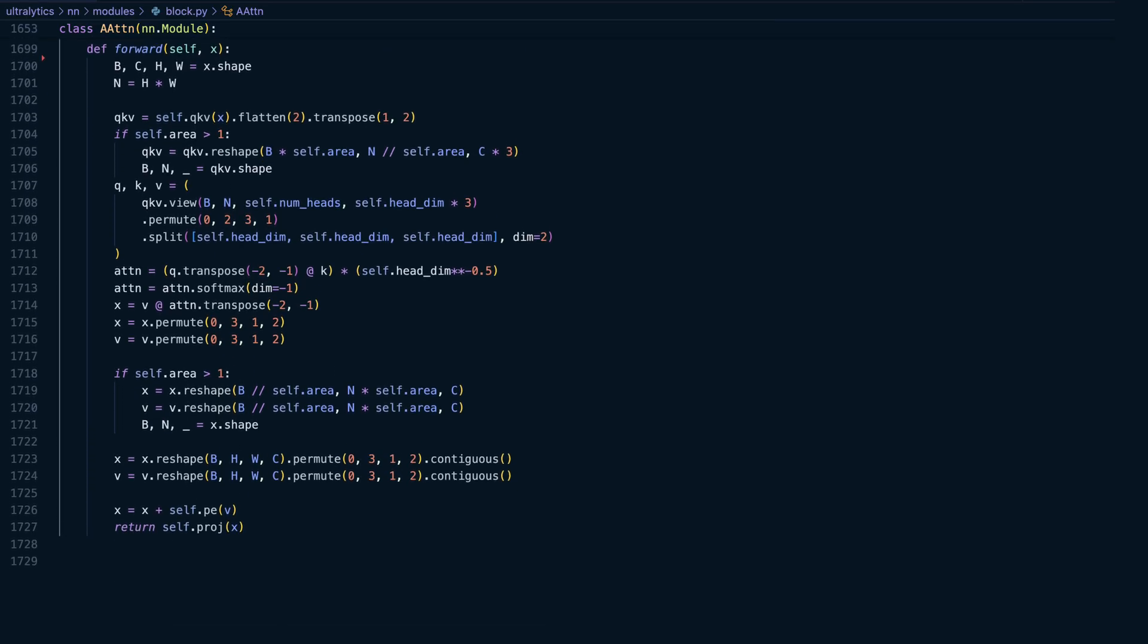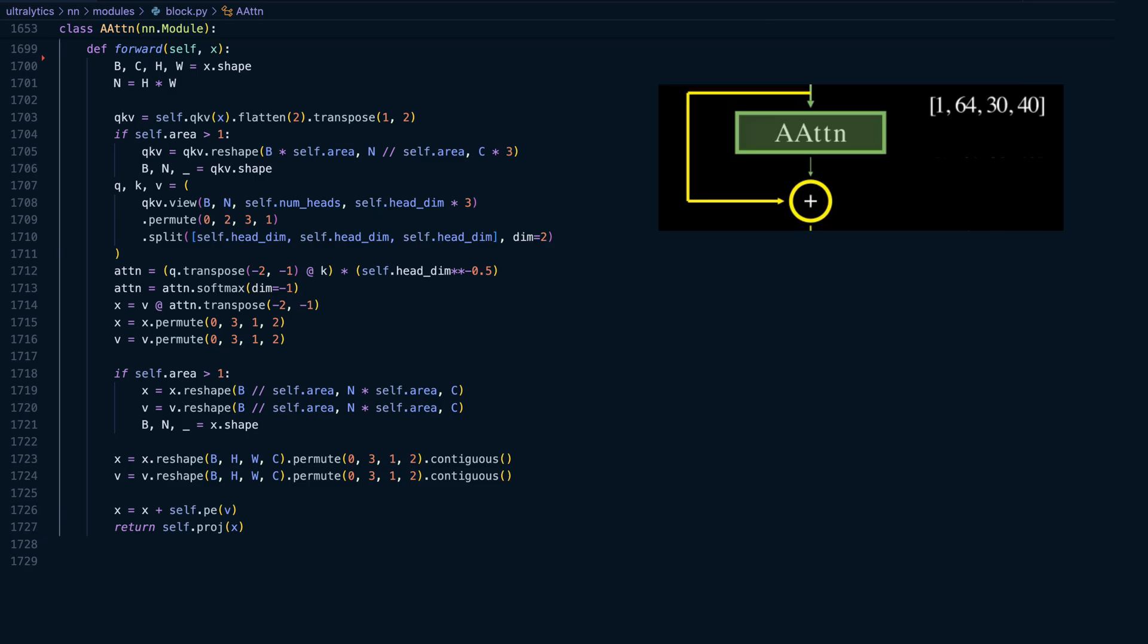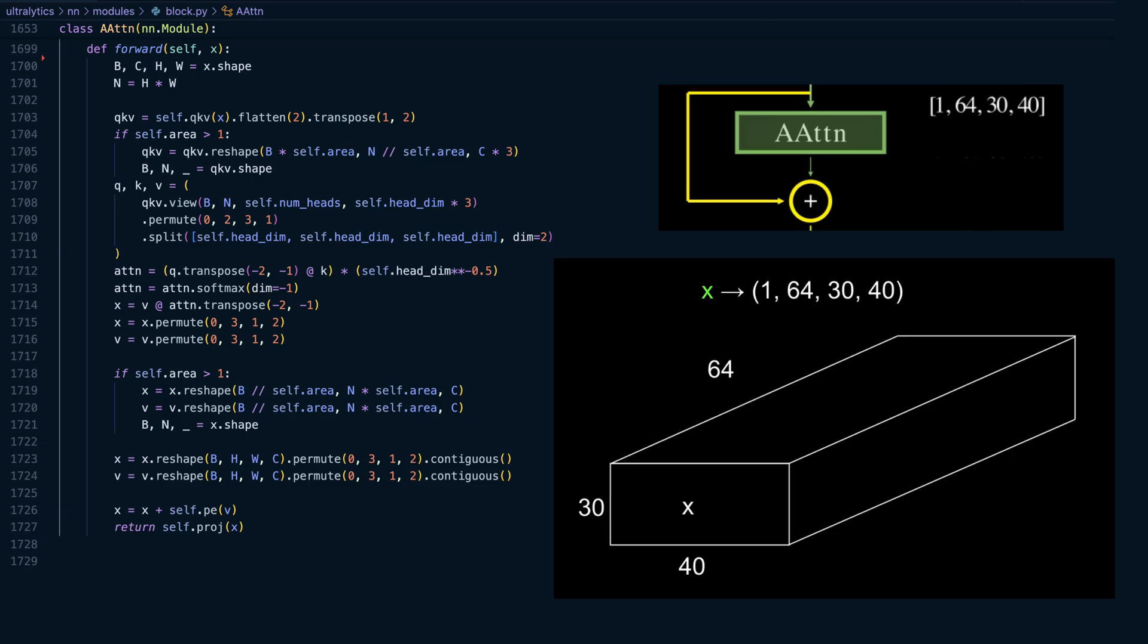As we saw earlier, the input tensor to the area attention block has the following dimensions: a batch size of one, 64 channels, 30 pixels in height, and 40 pixels in width. This means that for our batch of one, our car image, we have 64 feature maps, each with a spatial resolution of 30 by 40. Here we can see the first 32 feature maps, and we can also zoom in on one of them to see what kind of detail it's capturing.